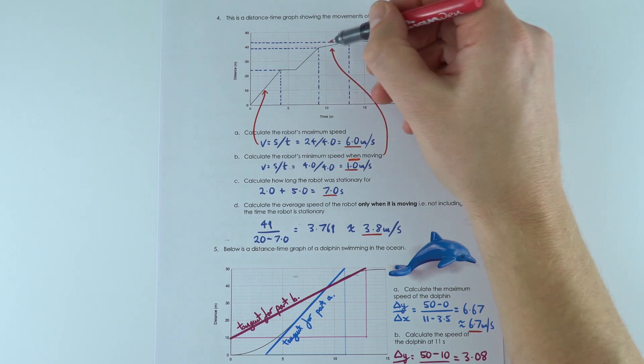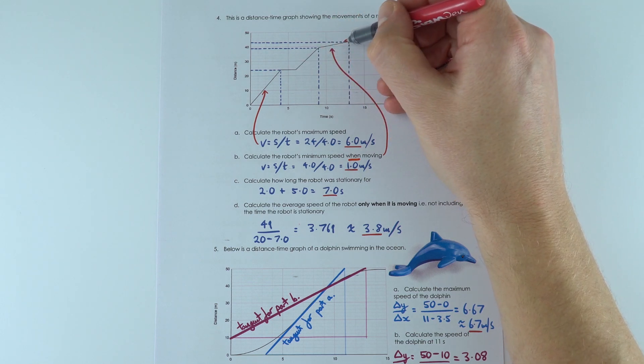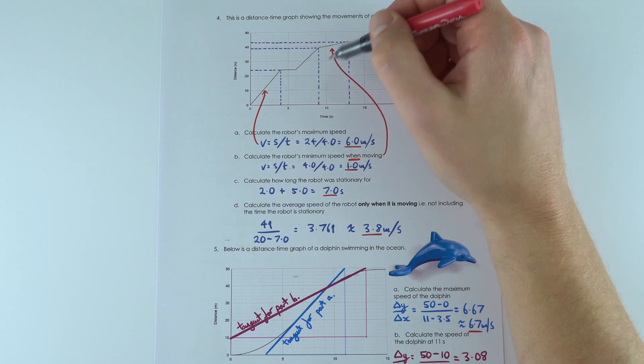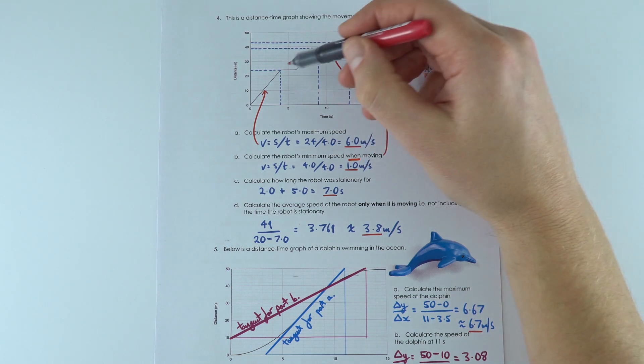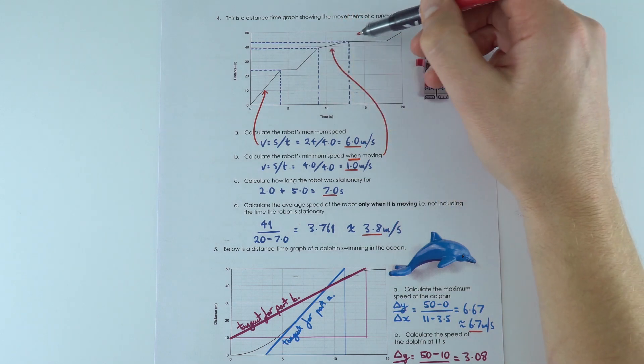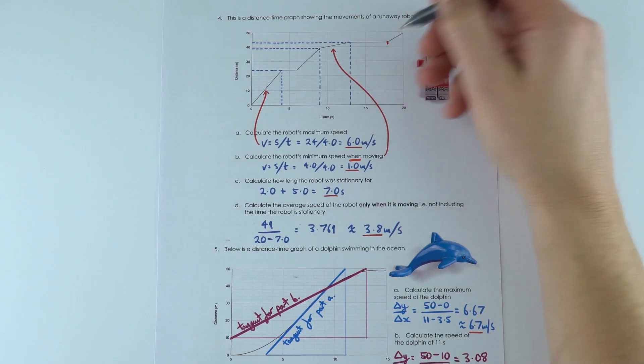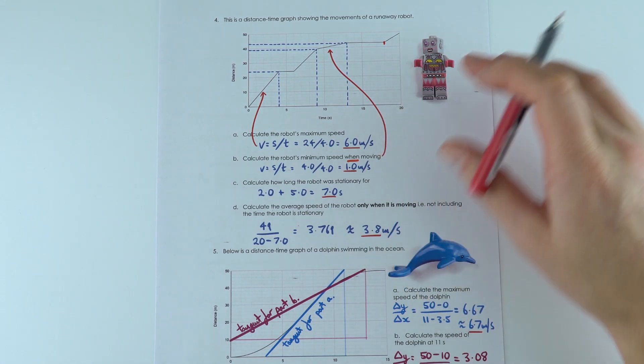is actually zero when they're stopped, but when they're moving the lowest gradient is this line here, and again that gives a value of 1 meter per second. It was stationary for a total time of 7 seconds, so 2 seconds here and 5 seconds up here. Again, that's all interpreting data from that graph.